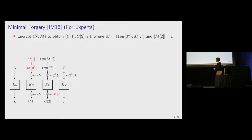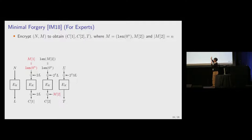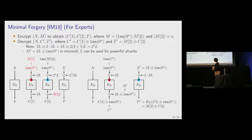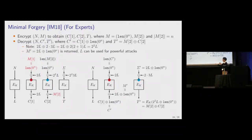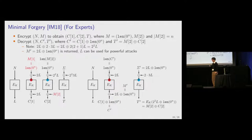In the minimal forgery, the adversary has Alice encrypt N and M, where M has two blocks: M1 is n zero bits and M2 is anything with n bits. C1, C2, and T are sent over the channel. The adversary creates (N, C', T') where C' is a one-block ciphertext equal to C1 XOR (length of n zero bits), and the tag T' is M2 XOR C2. Surprisingly, this will be accepted by Bob.